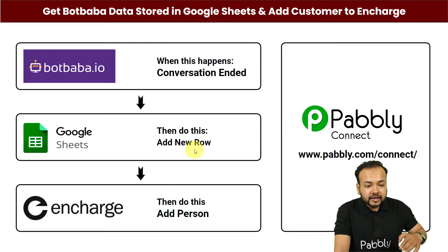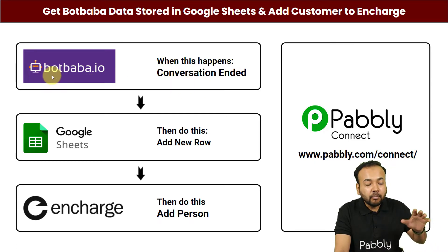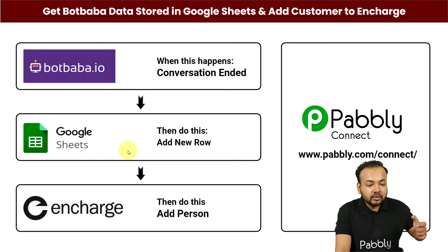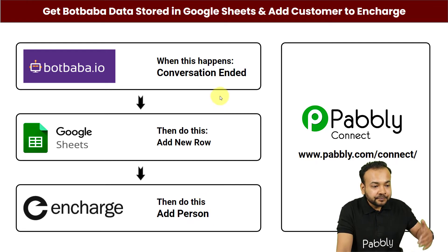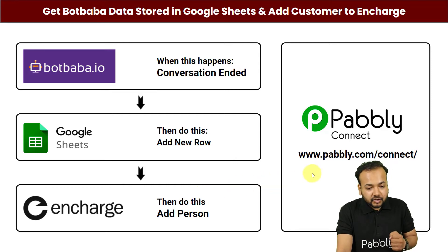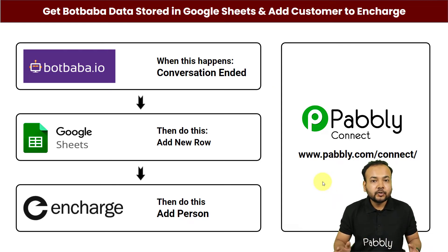This will be the flow of this automation. Suppose any person is engaged in a conversation with your chatbot created with BotBaba. As the conversation ends, the person's details will be added to Google Sheets and also to Encharge automatically — you need not manually follow up or collect the details. It will save your time and energy and boost your productivity. We are using Pabbly Connect to create this automation, and anyone can set it up without any coding skills or programming knowledge.